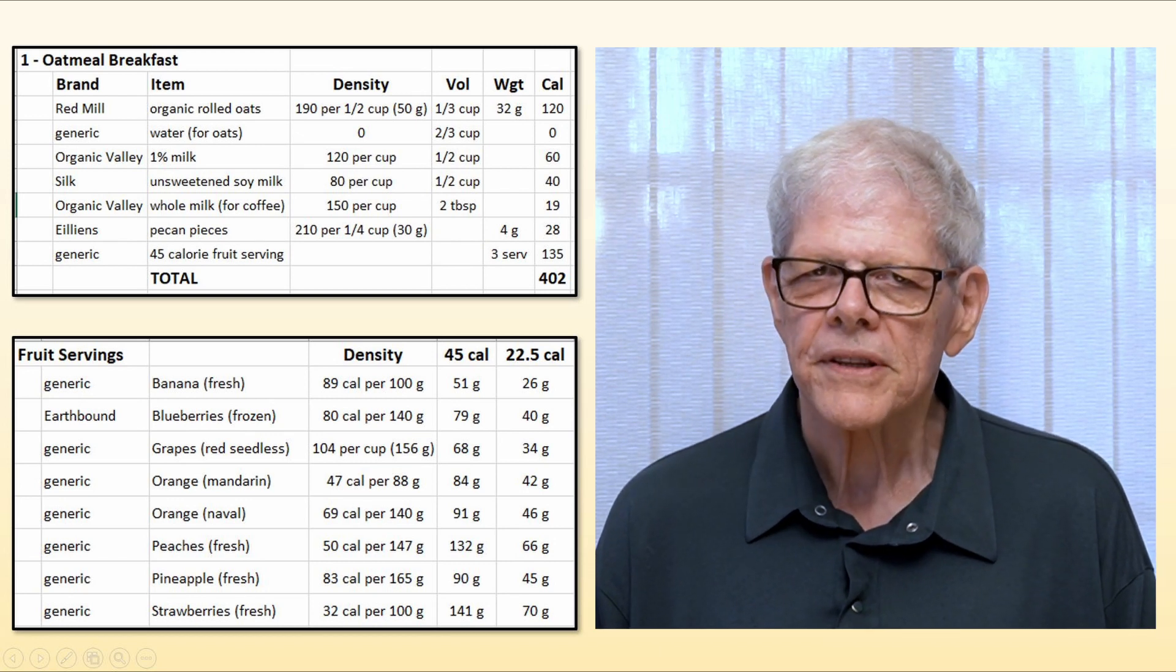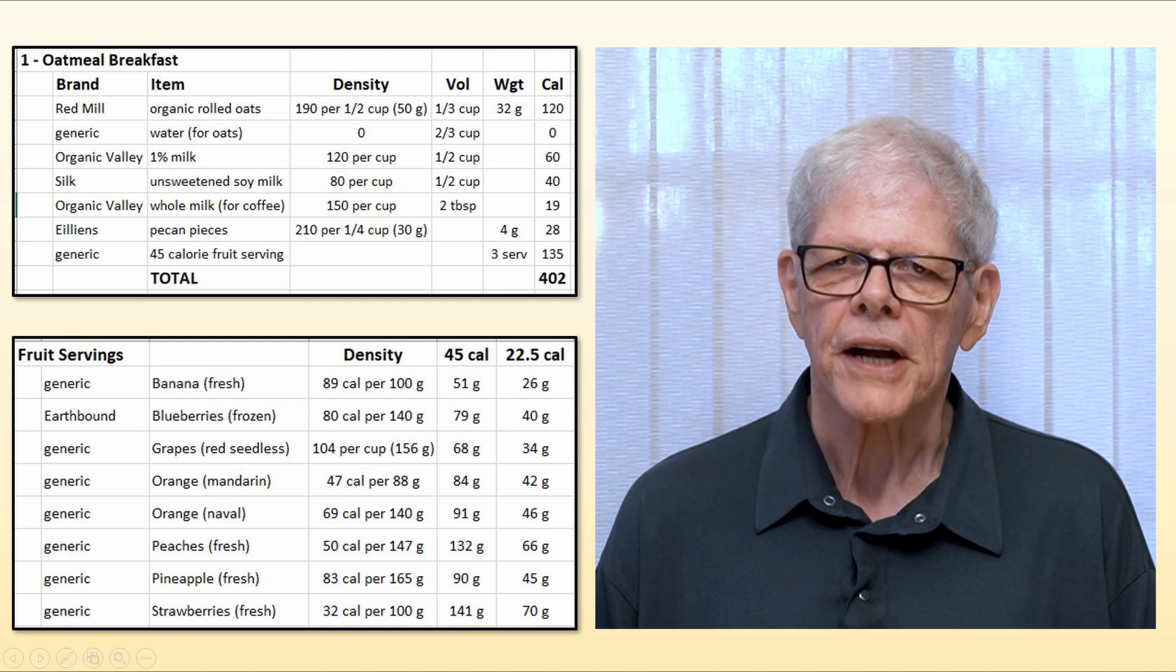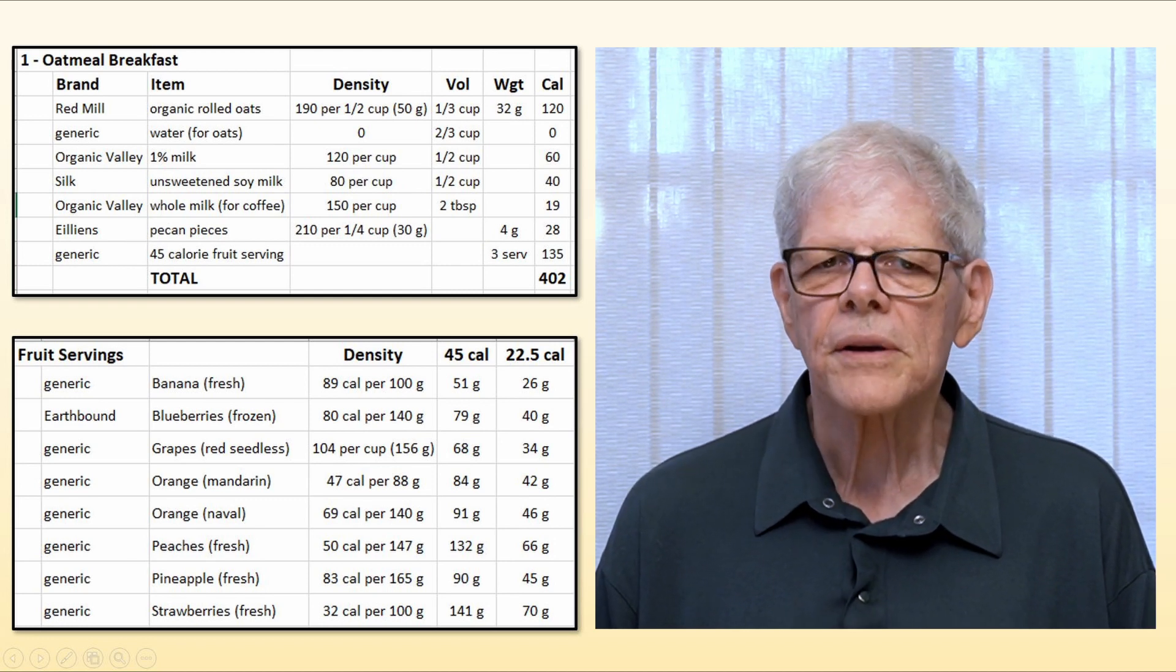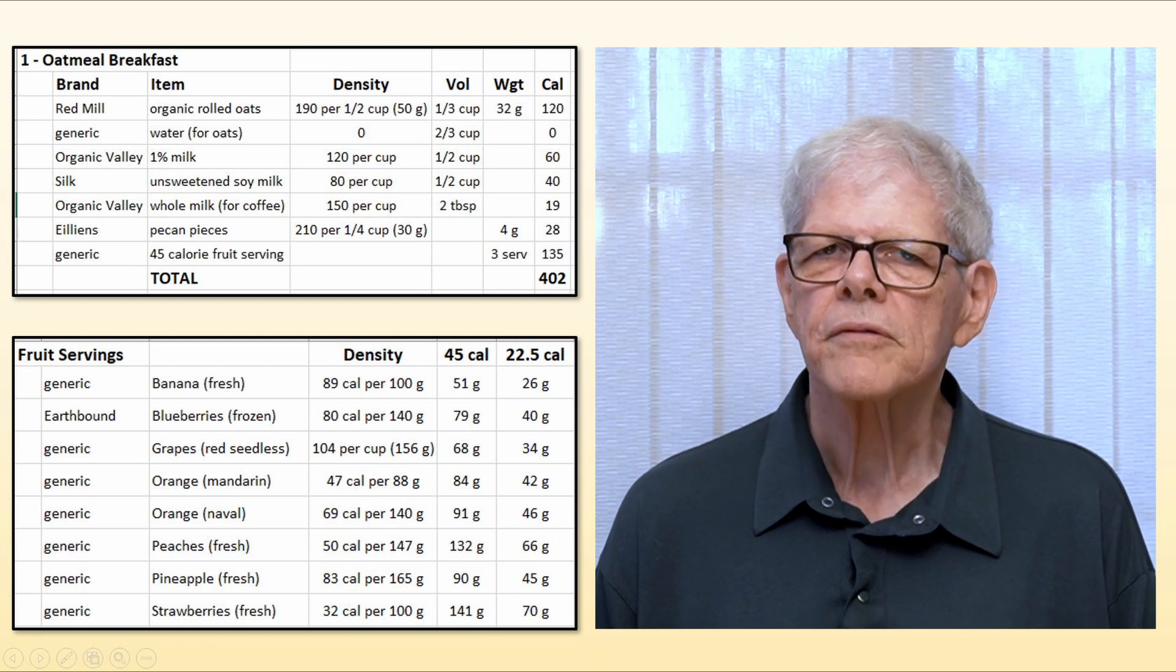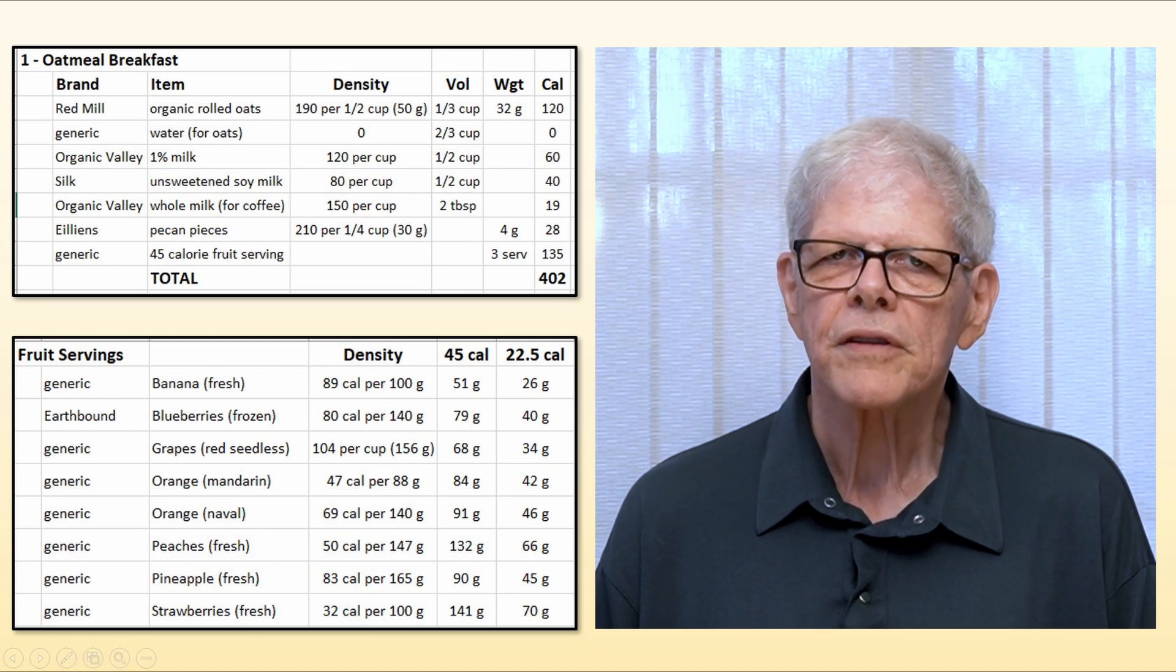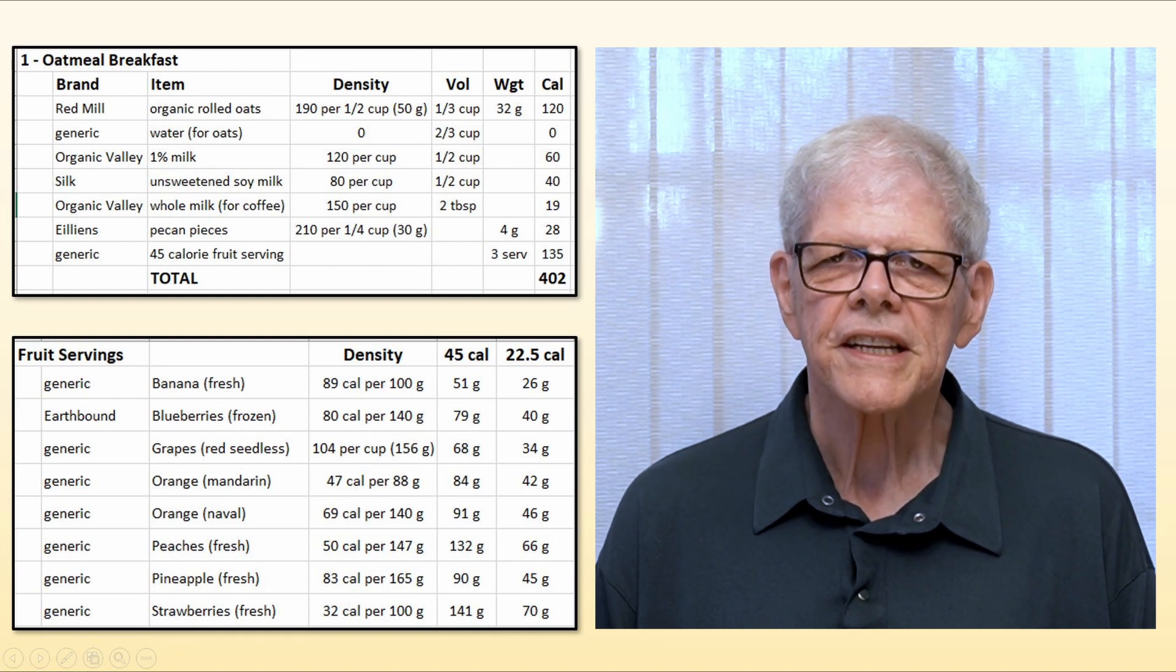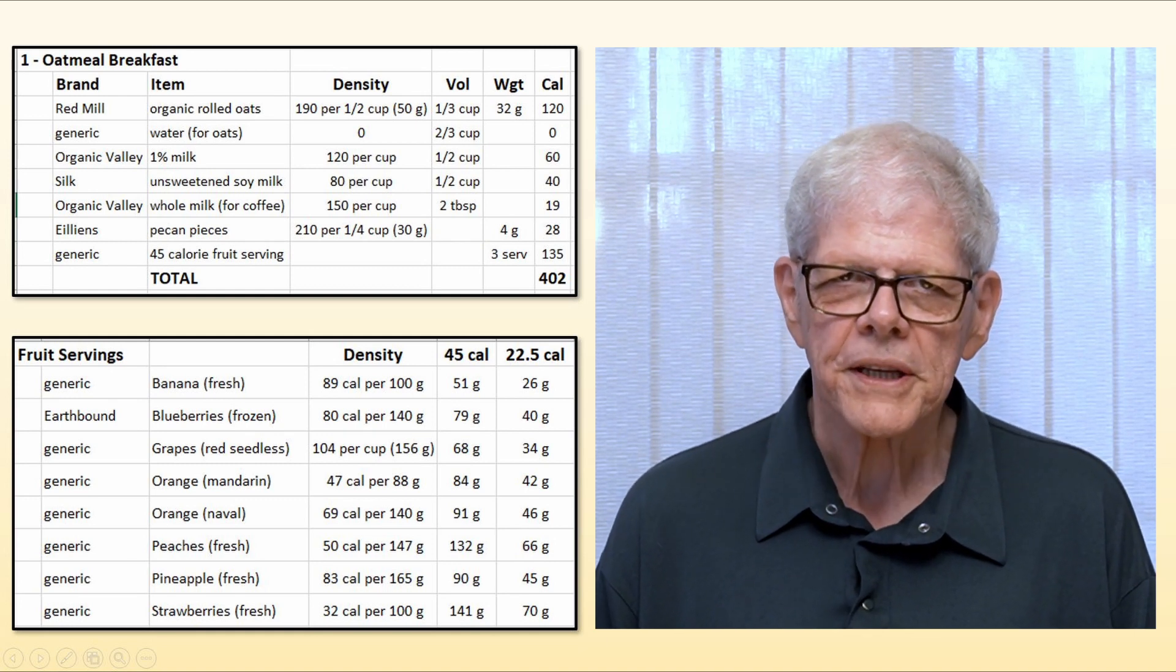If it is a generic item, then this information comes from my food diary that we'll discuss in the next session. Sometimes this information may also come from an internet search or even from a calorie book. The volume and weight columns indicate how much of the item is included in the meal.